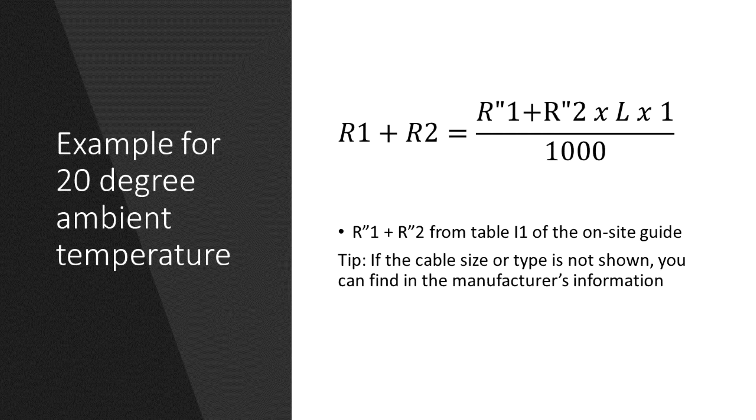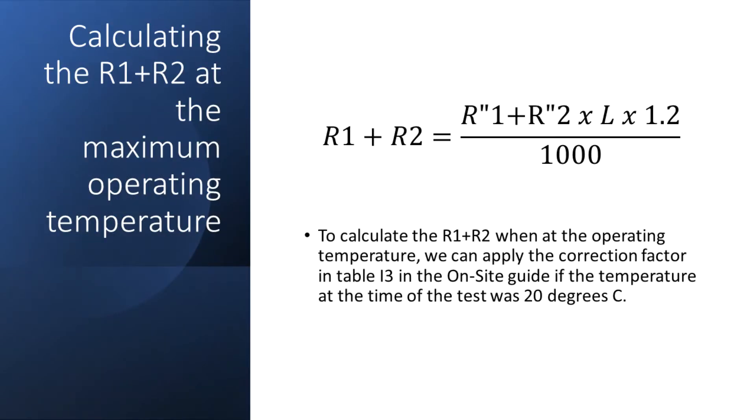Then to calculate the R1 plus R2 at the operating temperature, we can use the correction factor on the next page on table I3 which gives us a factor of 1.2 which will basically add 20 percent.